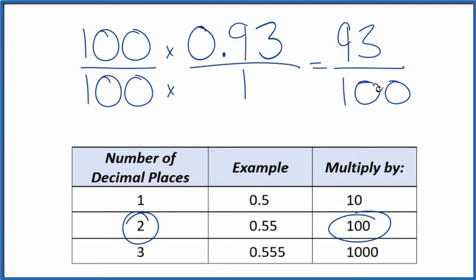93 over 100, which we can't reduce any further. If you divide 93 by 100 you get 0.93.